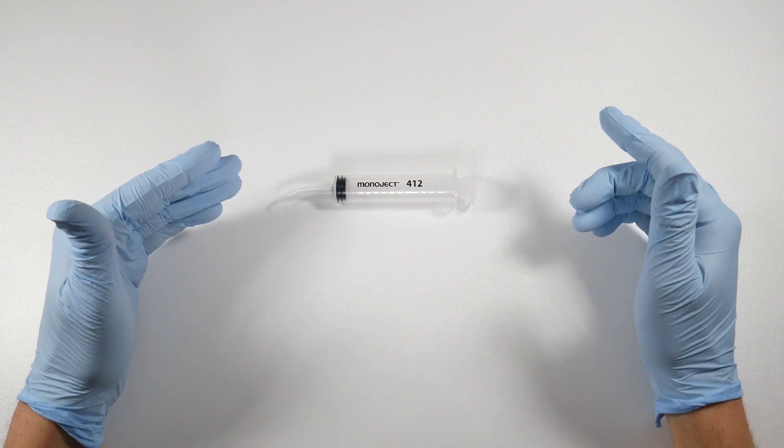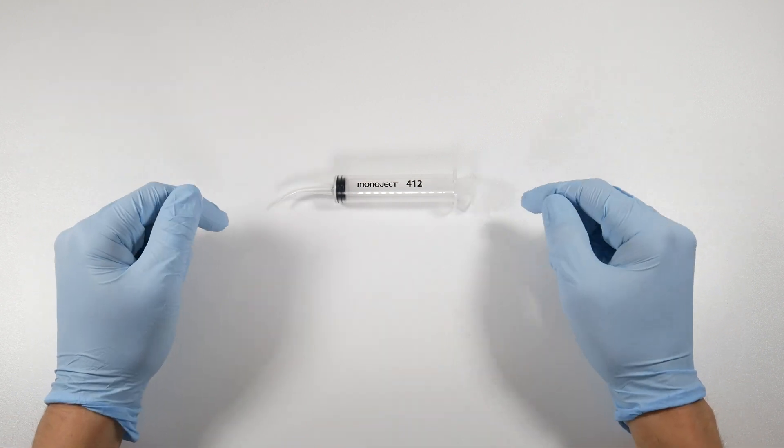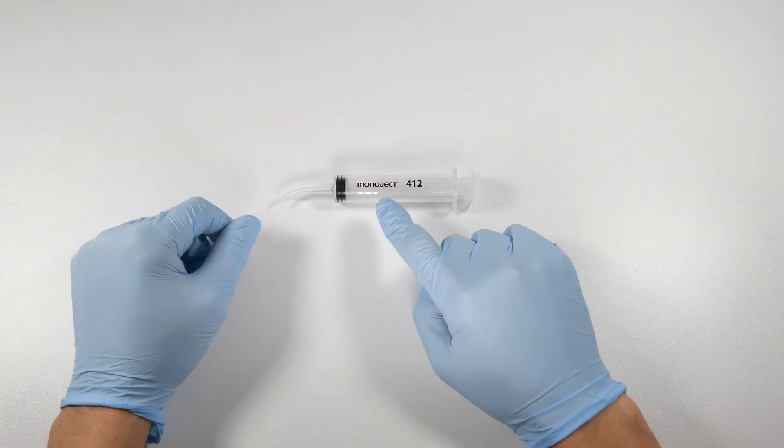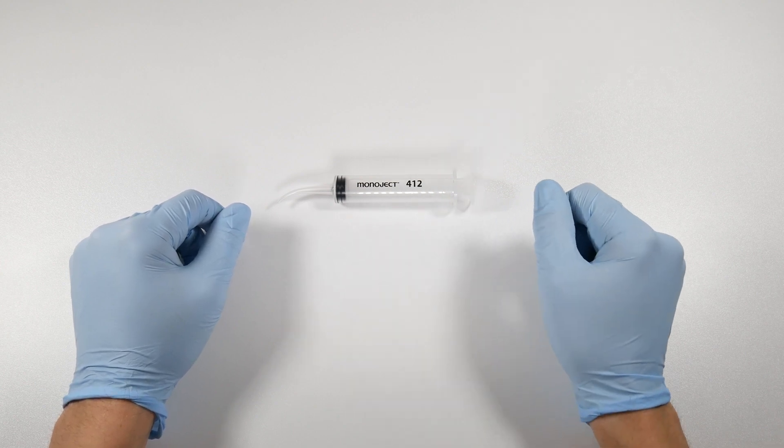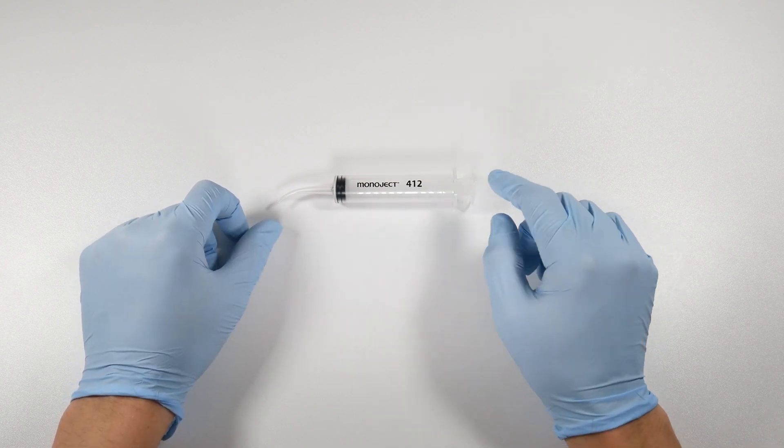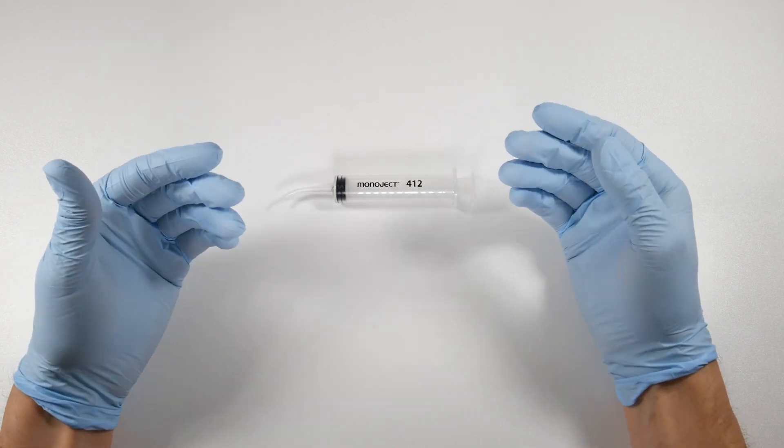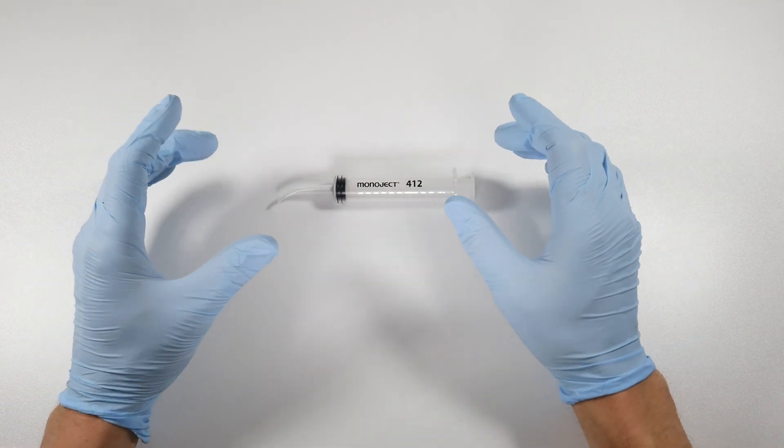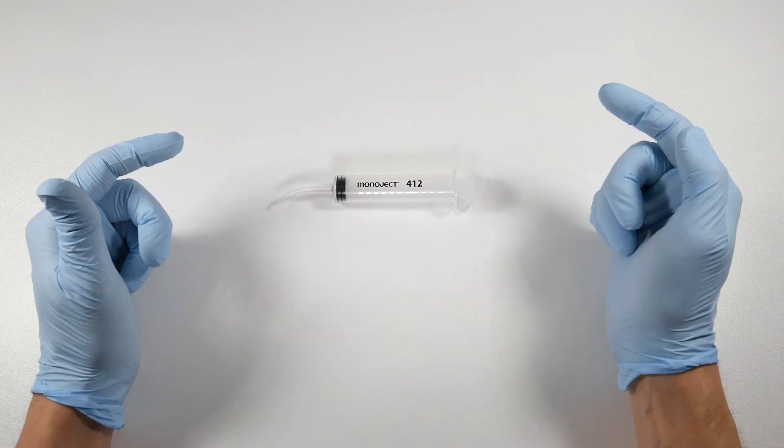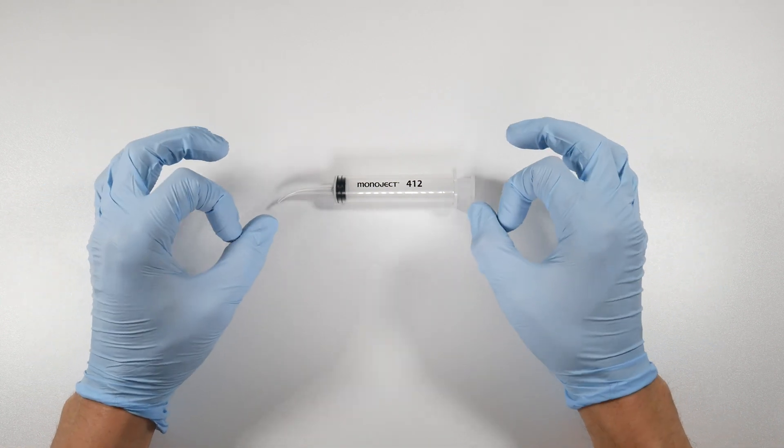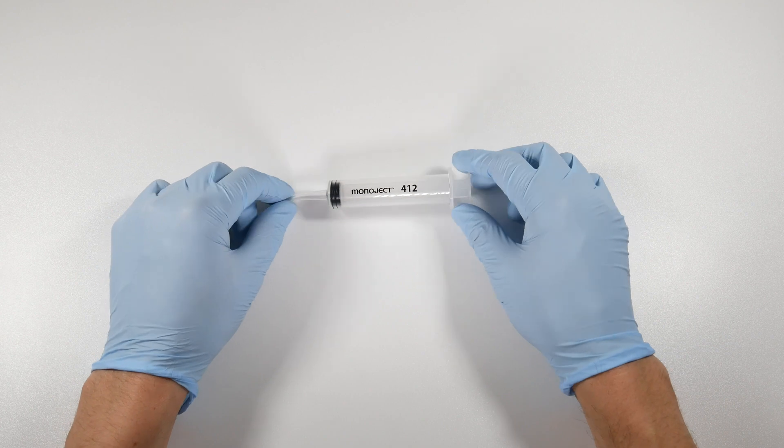So what happens if we do everything right and then our patient comes back to our office and they've developed a dry socket? Well, again, that's where you're going to be happy to have these monoject syringes around because you can fill them up with saline to then flush out that site and get some of the food debris and particles that may be sitting in that socket out of there, clean it up a bit, and then put your favorite dressing within that socket.